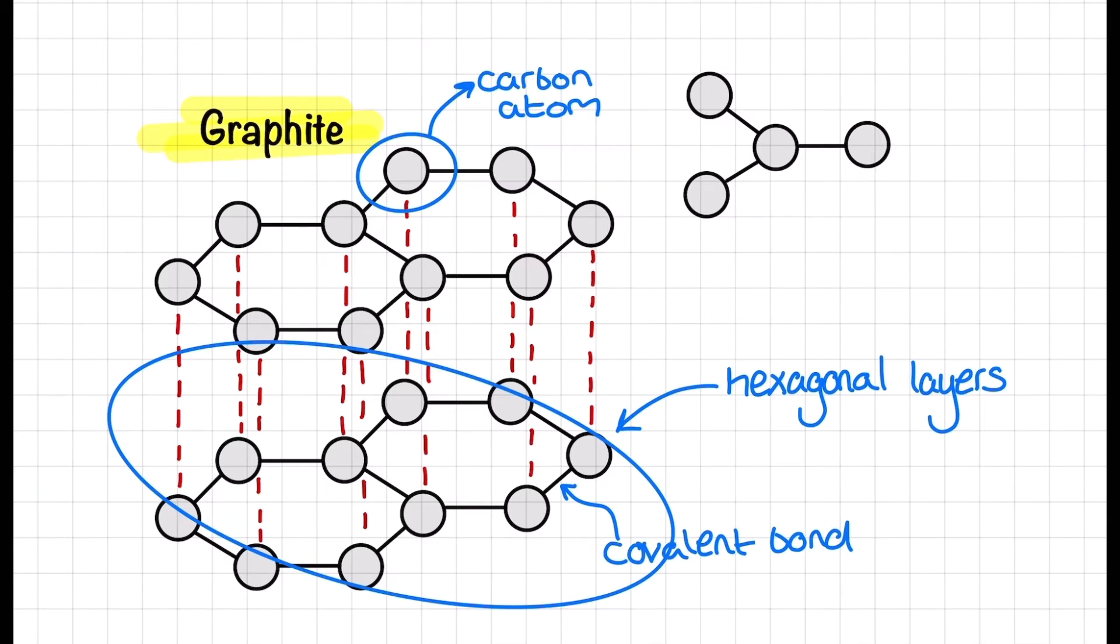Within the hexagonal layers each carbon atom is surrounded by three bond pairs of electrons and this creates a trigonal planar shape around each carbon atom and a bond angle of 120 degrees.